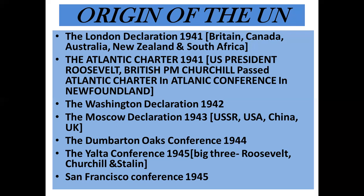In the Washington Declaration, it was decided not to sign any further separate treaties with any countries. In the Moscow Declaration, attended by USSR, USA, China, and UK in October 1943, China participated for the first time and they discussed the full plan of the UN. The Dumbarton Oak Conference of 1944 was very important — for the first time the blueprint was drawn on how to structure this organization. The Yalta Conference was attended by Roosevelt, Churchill, and Stalin — the 'Big Three' — and all main points were discussed.